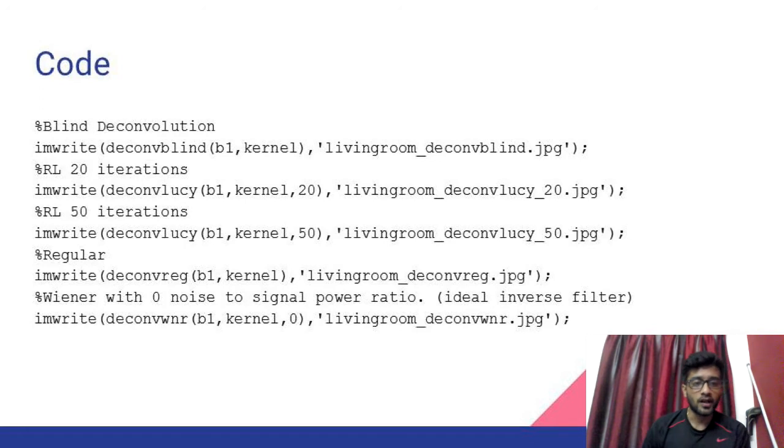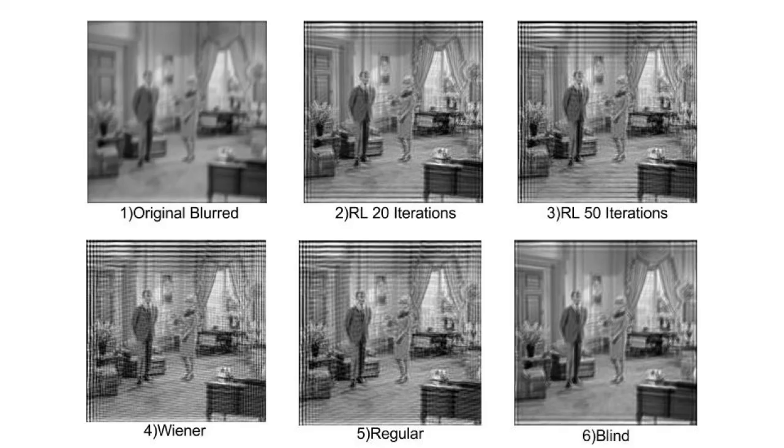Here is the code. As you can see, we have used MATLAB inbuilt functions to perform deconvolution. We will test each deconvolution method with the obtained estimate kernel and the blurred image. The methods used are deconvblind, deconvLucy, deconvreg and deconvwiener. Next, I will tell you about the results.